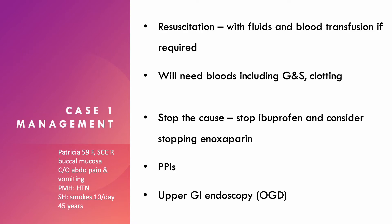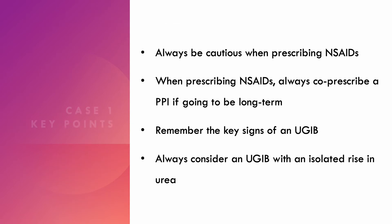Management: resuscitate the patient with fluids and blood transfusion if required. Get bloods including a group and save and clotting. Stop the ibuprofen, and consider stopping enoxaparin as it may worsen the bleeding. Treatment — likely caused by a gastric ulcer — can include high-dose PPIs, led by the medics. The patient will likely need an upper GI endoscopy (OGD) carried out by gastroenterologists to stop the bleeding. Key points: always be cautious prescribing NSAIDs; always co-prescribe a PPI; remember the signs of an upper GI bleed; and always consider an upper GI bleed with an isolated rise in urea.